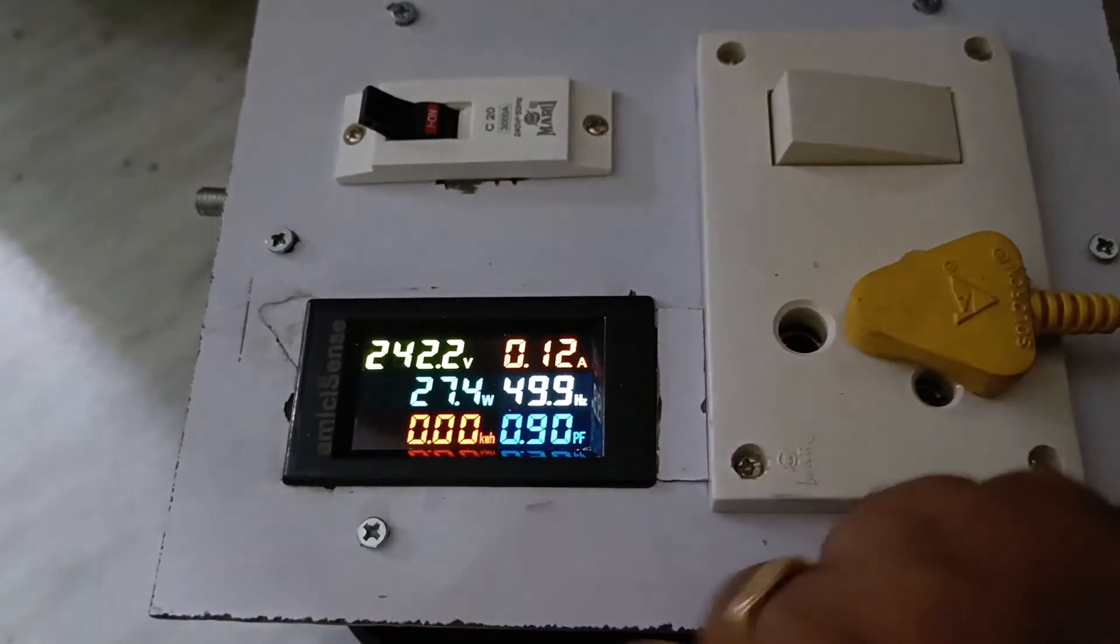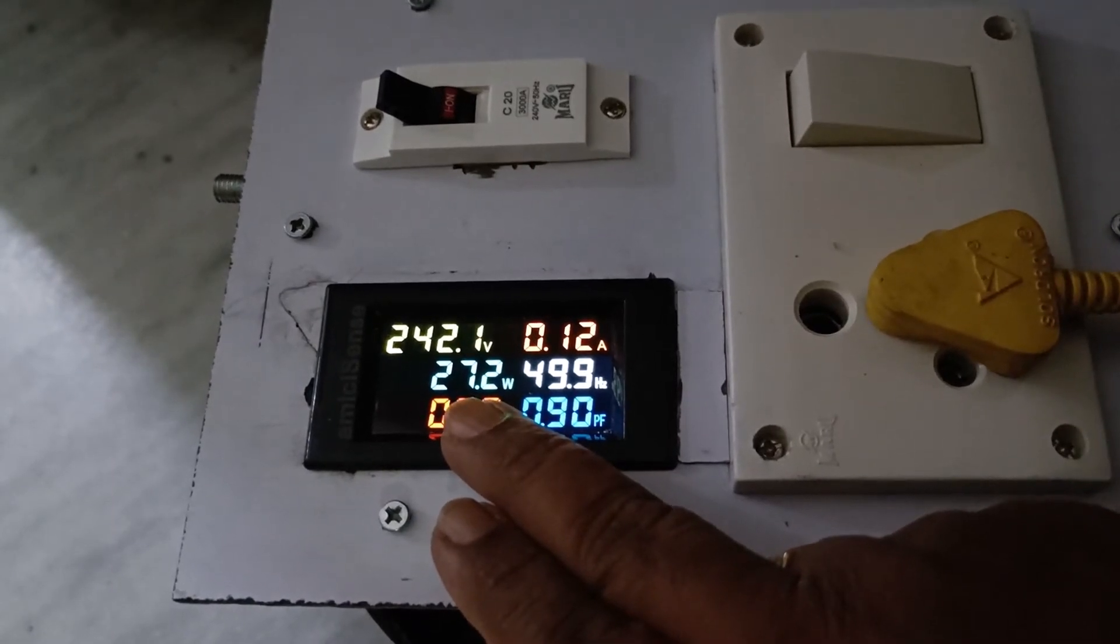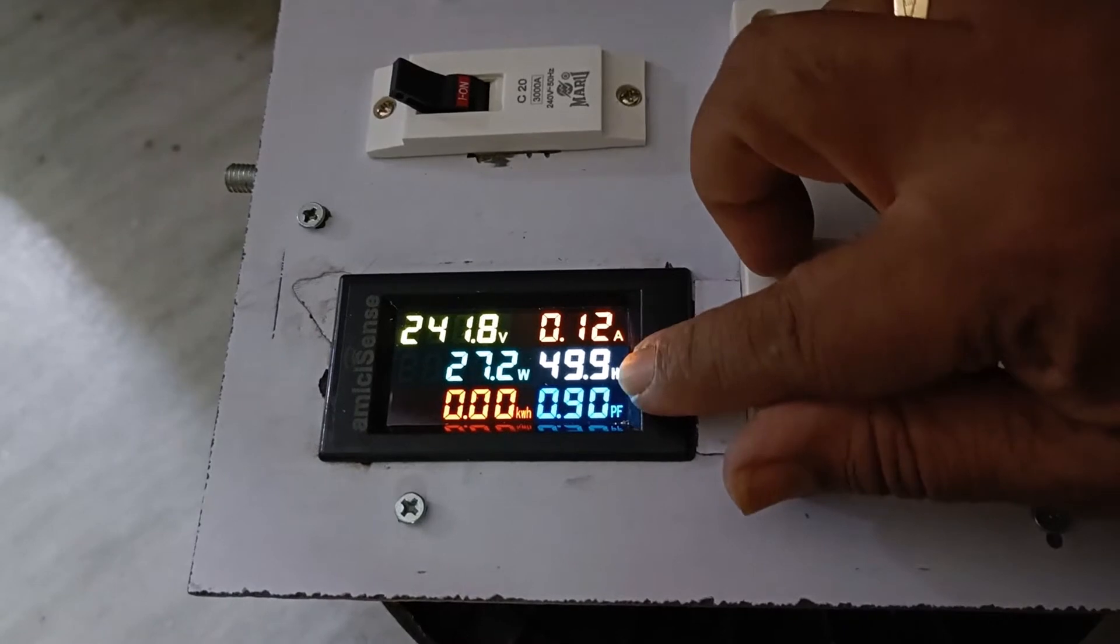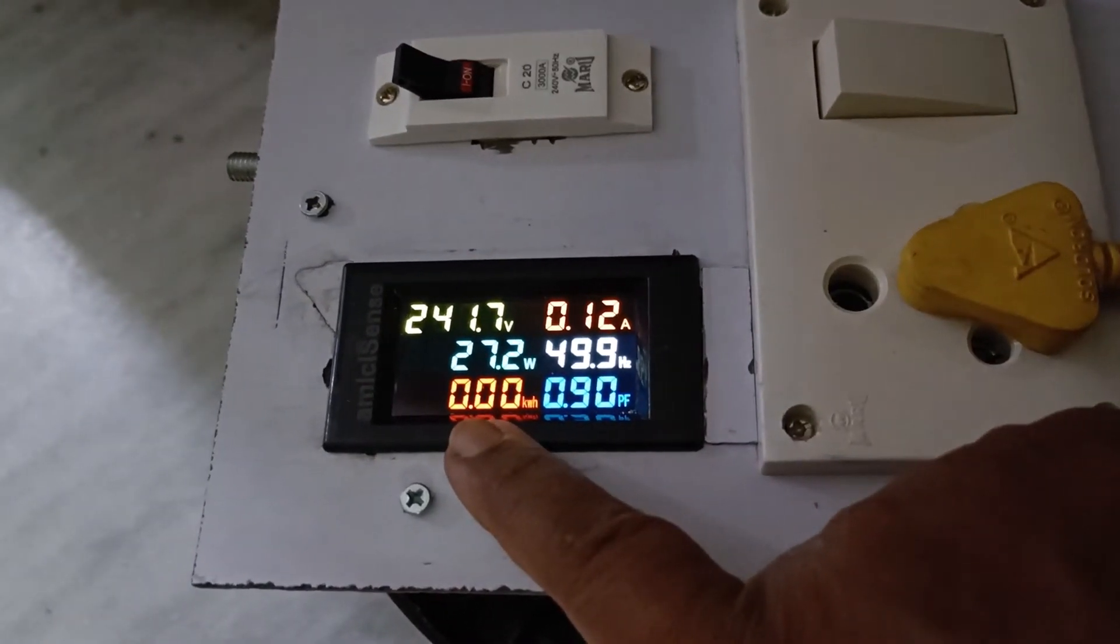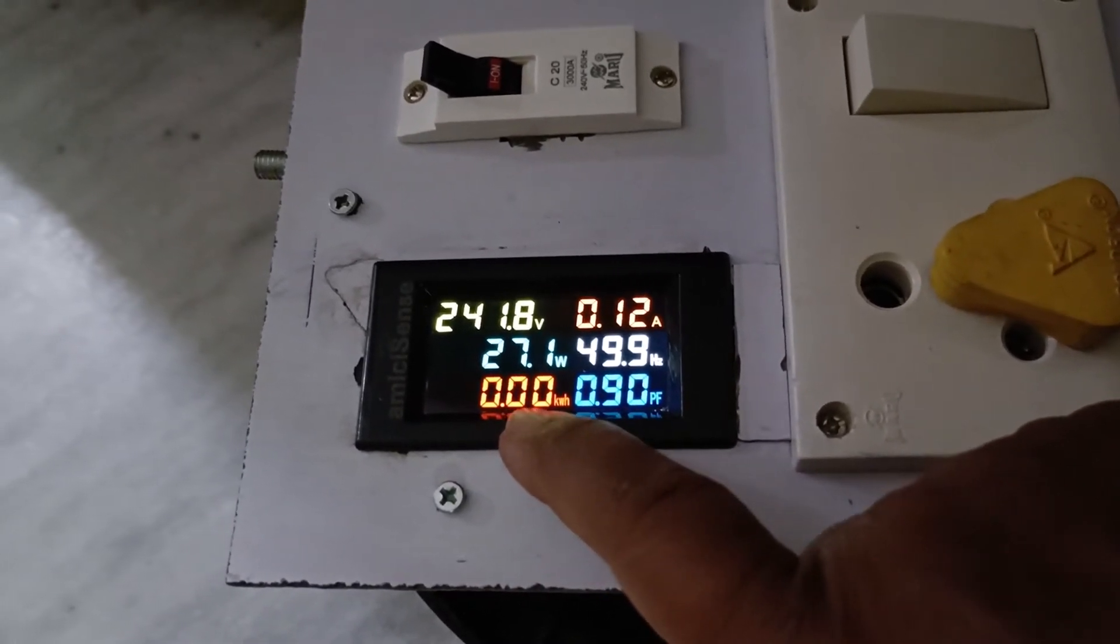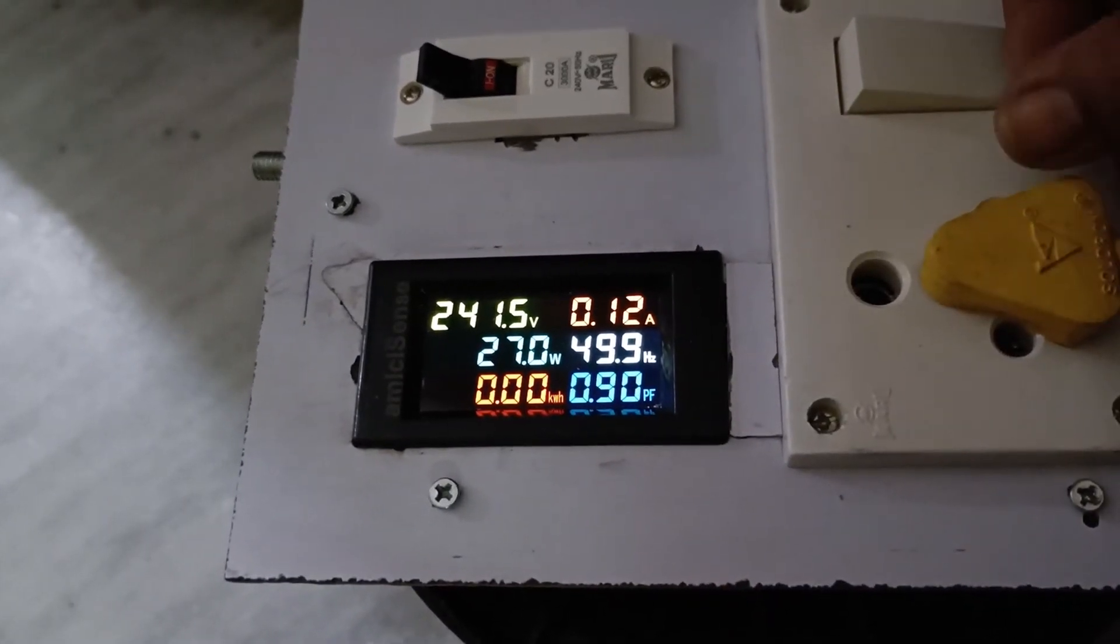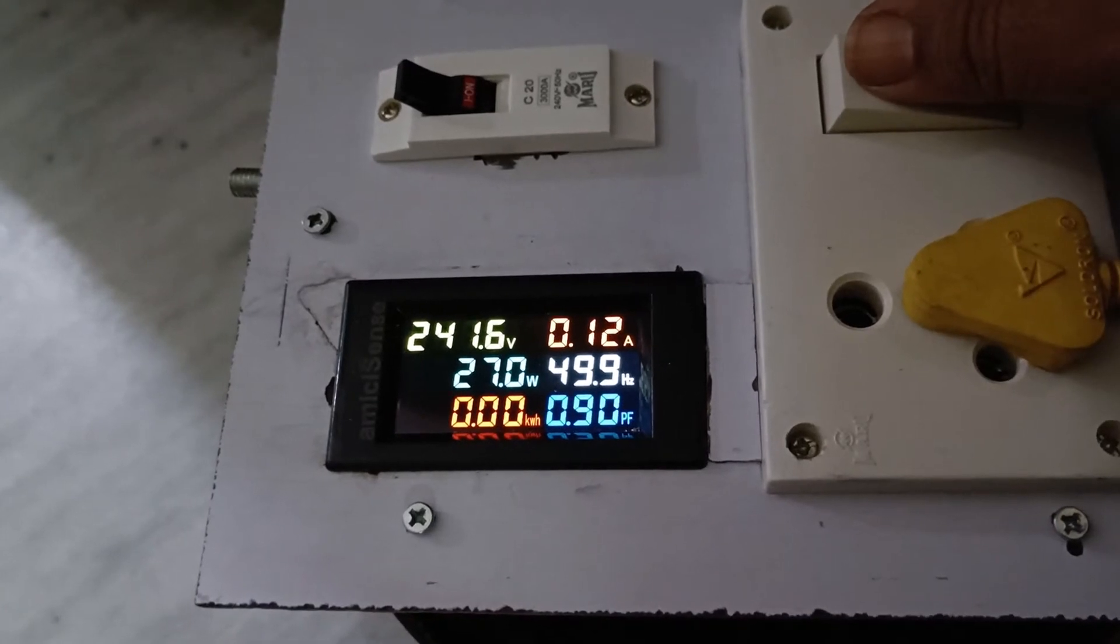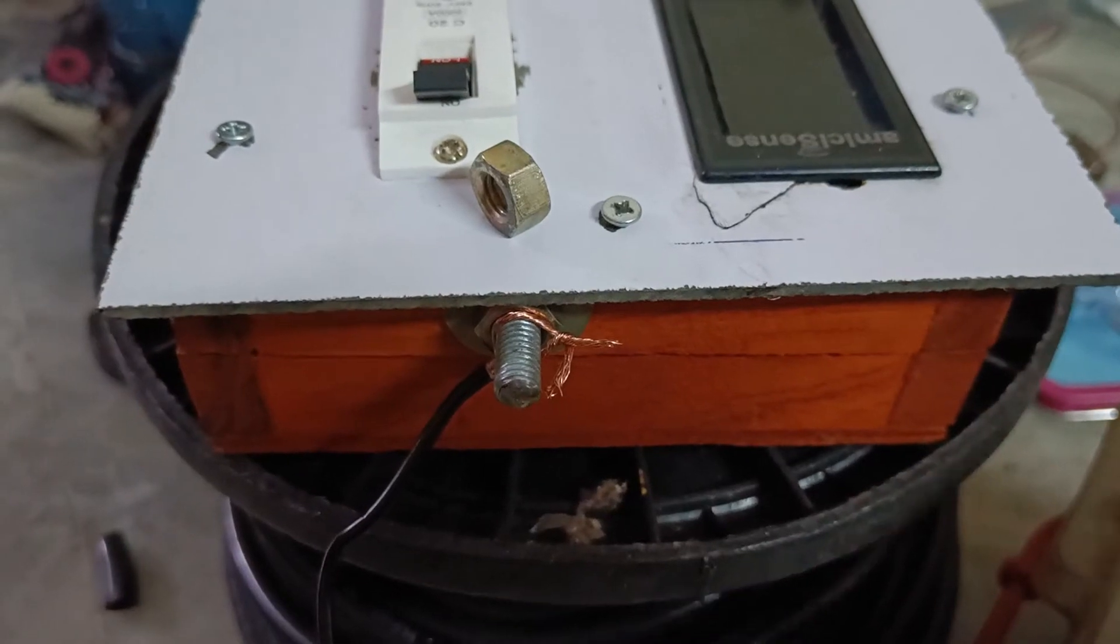That soldering iron is a 25 watt soldering iron. Now I can see it consumes around 27.2 watt at 0.12 ampere. This is the frequency, this is the power factor, and when it is in a position to show some kilowatts this also should get updated. So it's working, now we will connect to EV and see.